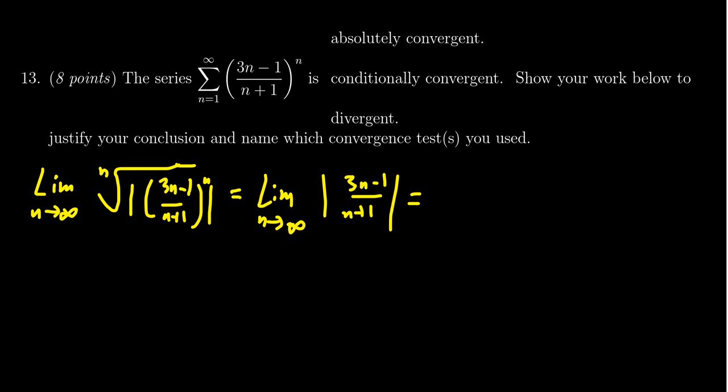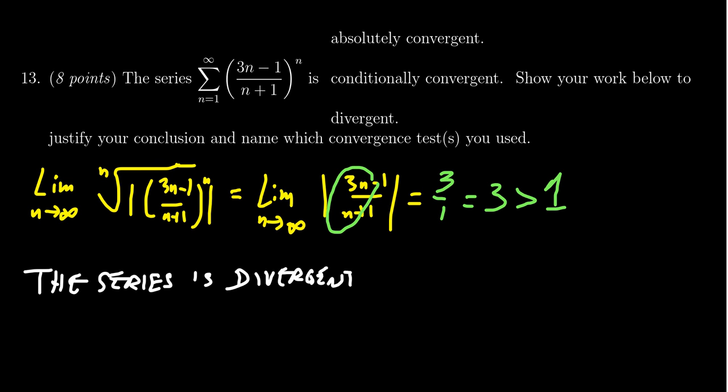And so notice in this situation that as this is a balanced rational function, this thing will converge towards 3 over 1, particularly 3. And so as this limit is greater than 1, this tells us that we can conclude that the series is divergent by the root test.